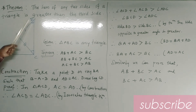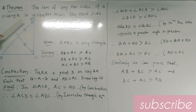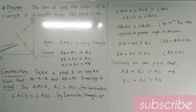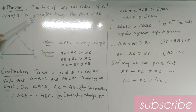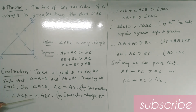Now draw and join CD. In triangle ACD, AC is equal to AD by construction. So this is an isosceles triangle. Therefore, by the isosceles triangle theorem, angle ACD is congruent to angle ADC. These two angles are equal by the isosceles triangle theorem.